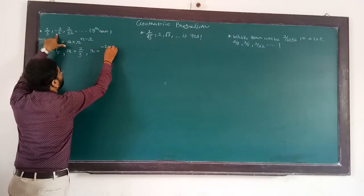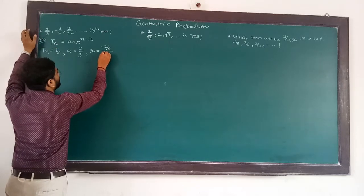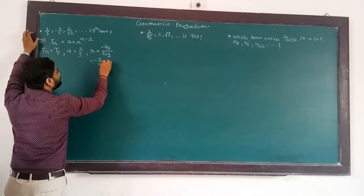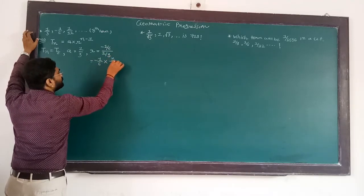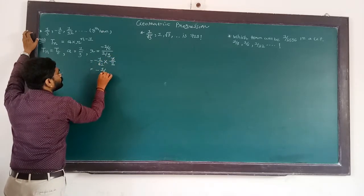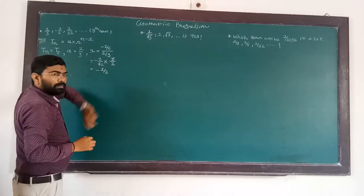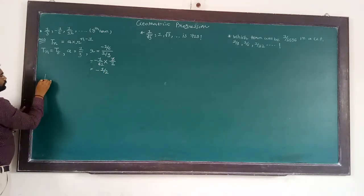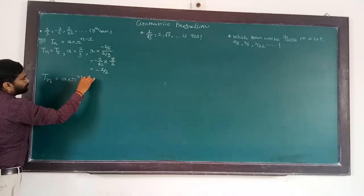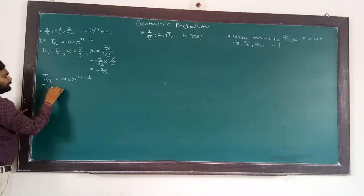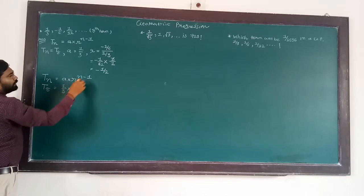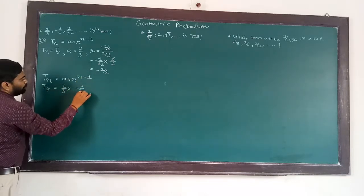R is equal to second term upon first term: 1 upon 6 into 3 upon 1. So we write here R is equal to minus 1 upon 2.